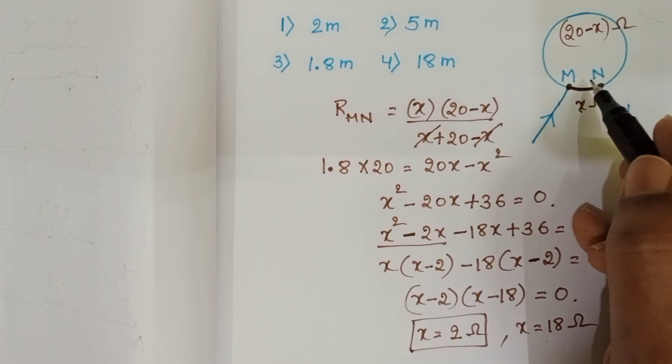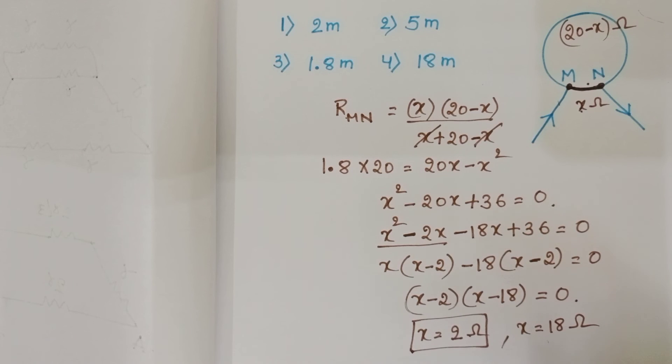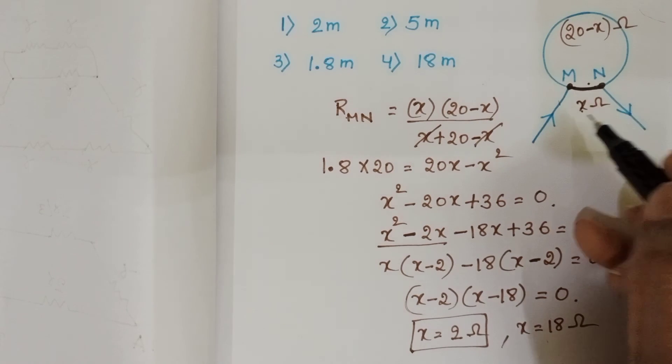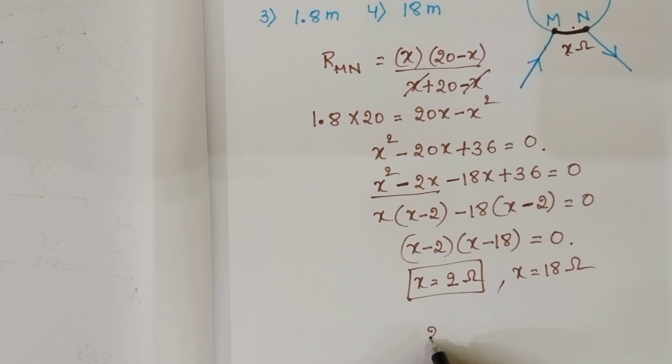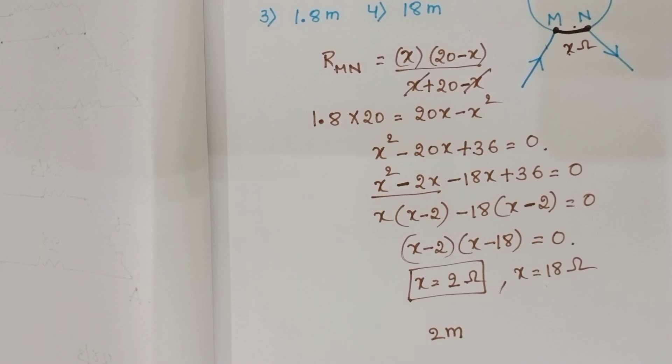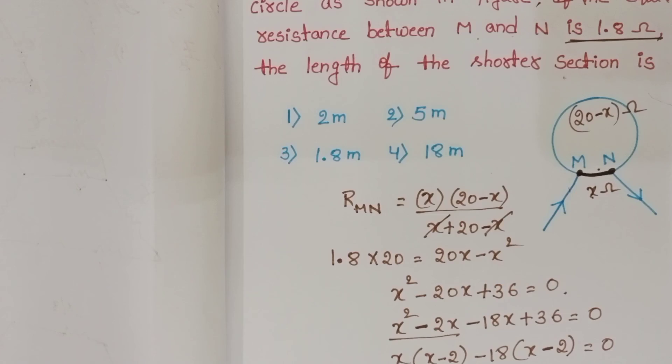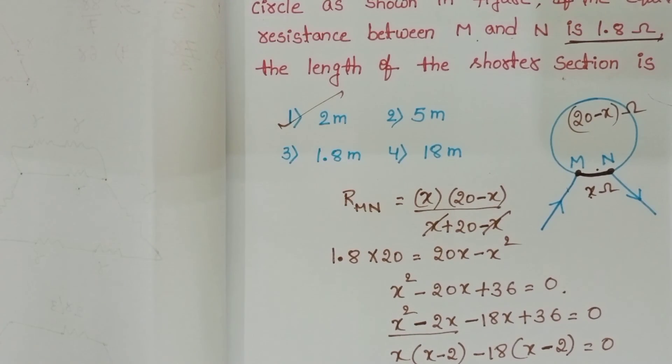Then how many meters length is this one? Each meter is 1 ohm, then the length of this part becomes 2 meters. So check the given options. First option is correct.